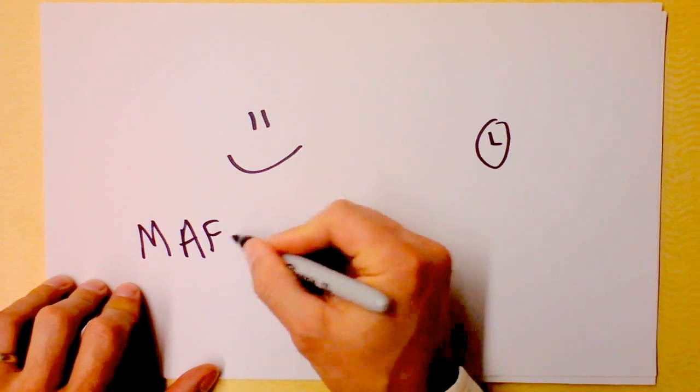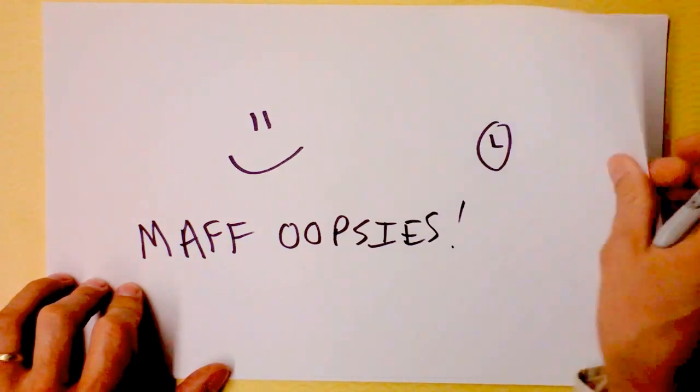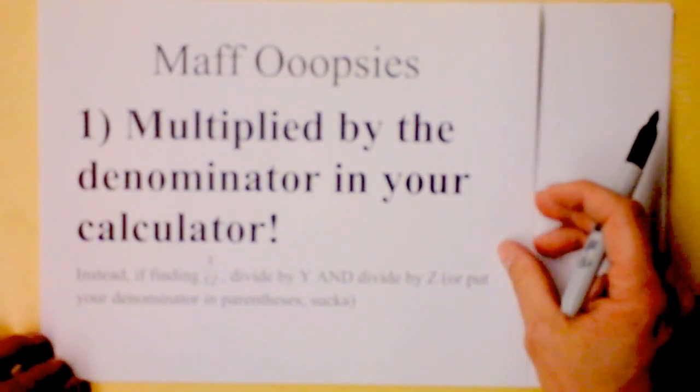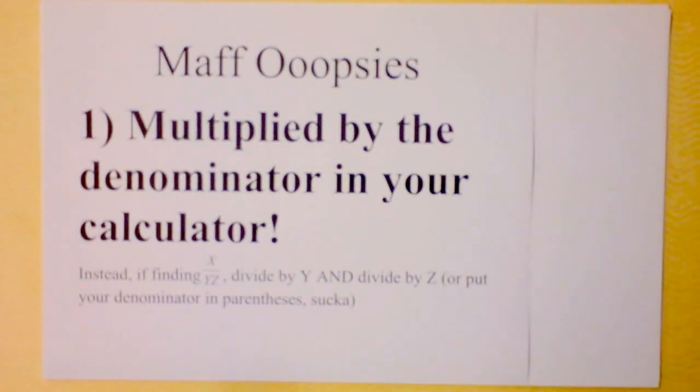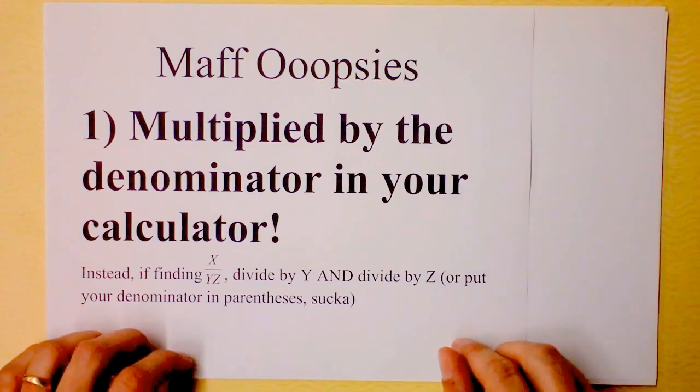Math oopsie number one. Here's what could go wrong: If you're trying to do a division problem and instead of dividing by the denominator, which is what you ought to do, you multiply by the denominator.